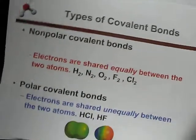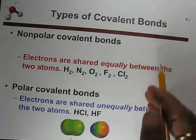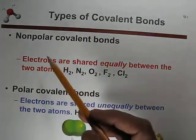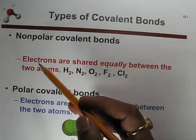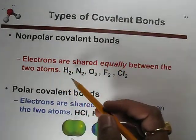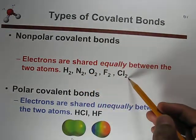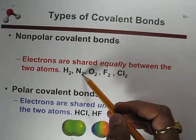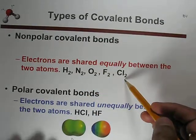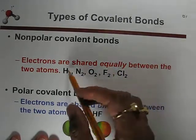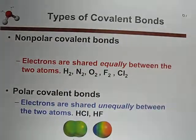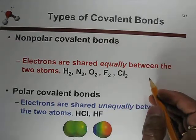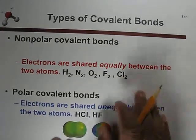There are two main types of covalent bonds: nonpolar covalent bond and polar covalent bond. In nonpolar covalent bonds, electrons are shared equally between the two atoms. These are seen in diatomic molecules with the same element — H₂, N₂, O₂, F₂, and Cl₂. If the two atoms are the same type, they form a nonpolar covalent bond with no polarity.